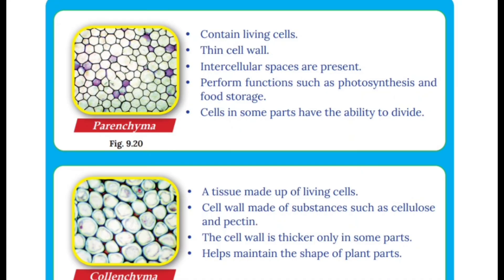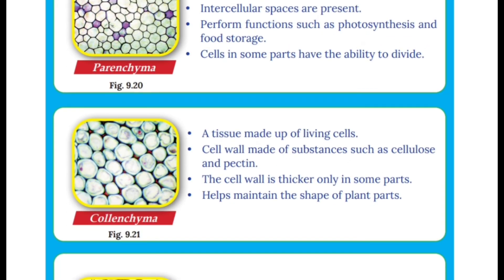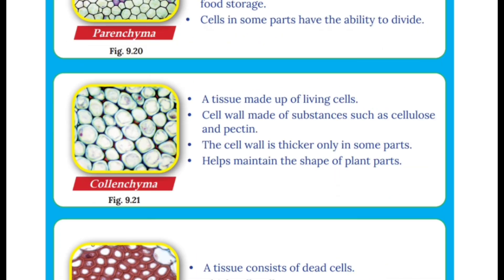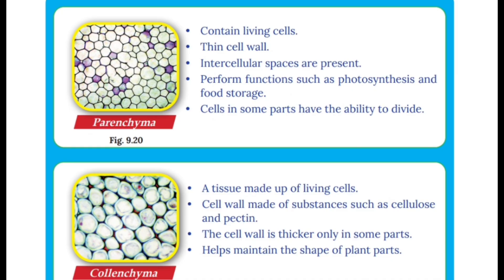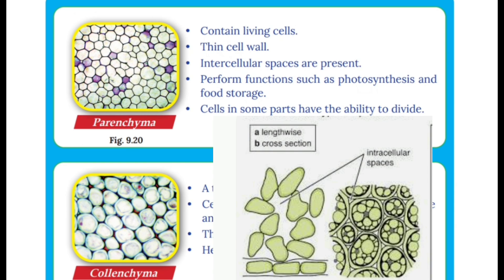Now we have the type of tissue. Intercellular spaces are present. Cells perform functions such as photosynthesis and food storage. Cells in some parts have the ability to divide.